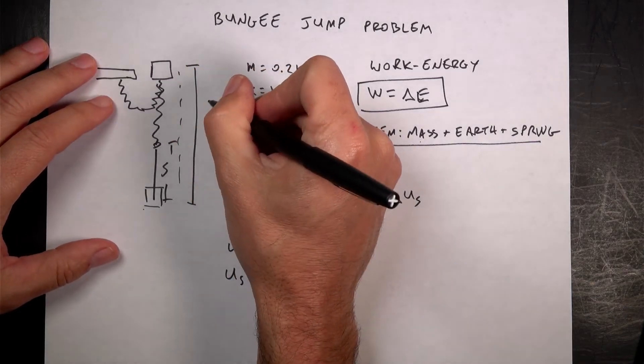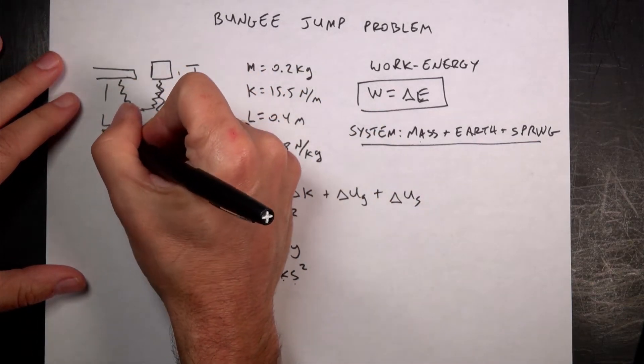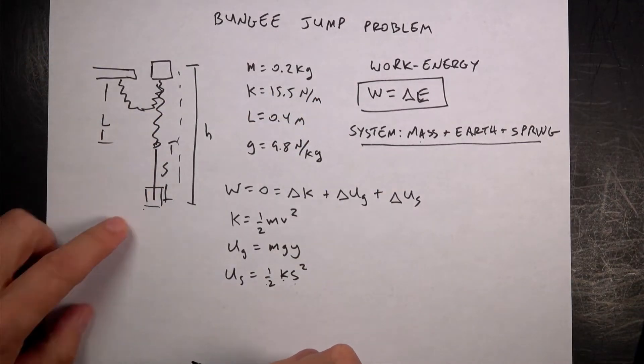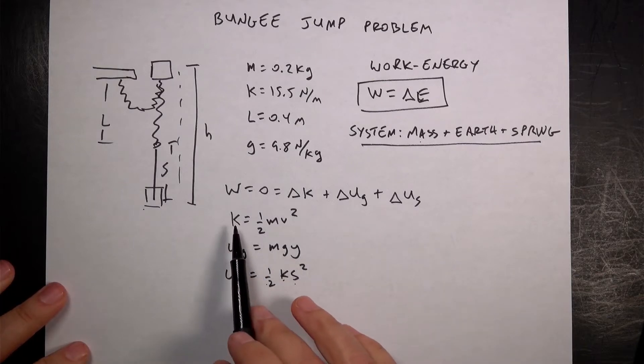So here you can see it's going to fall at distance H. This is L, that's unstretched length, and then that's S. So that does make it a little bit more difficult and fun. Let's start looking at these terms.